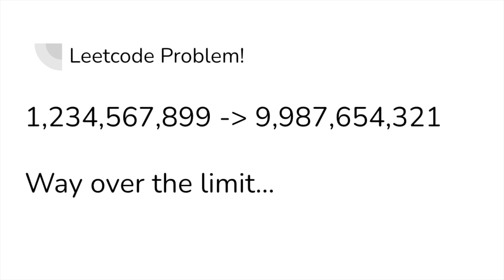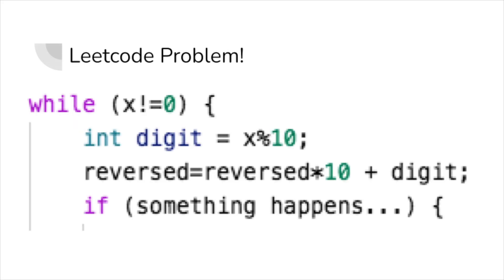To deal with this, let's put an if statement right after we get our variable reversed in the reversing loop, to ensure that we can return zero when we see that the reversed number is greater than the integer limit.